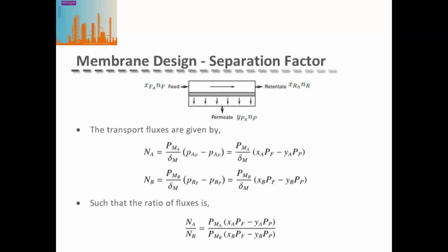We can also say that the ratio of these fluxes is simply given by the ratio of the permeability of our membrane for each of the materials and the driving force for each of our components.